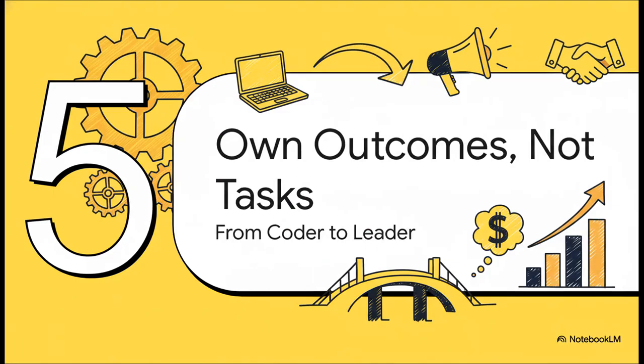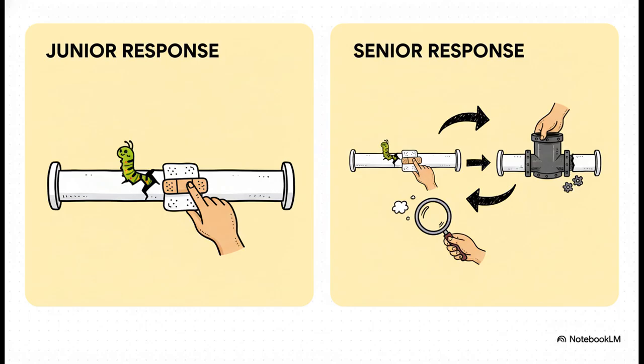This brings us to our final, and honestly, maybe the most important shift of them all. It's the move from being a coder who just completes tasks to being a leader who owns outcomes. And let me be clear, this has absolutely nothing to do with your job title. Here's the perfect example. When production goes down, a junior engineer's job is done when the immediate fire is out. The bug is fixed. Phew. But for a senior engineer, that's just the beginning. They own the entire outcome. That means asking, okay, why did this happen? And how do we make sure this can never, ever happen again? They don't just fix the bug, they fix the process that allowed the bug to exist in the first place.